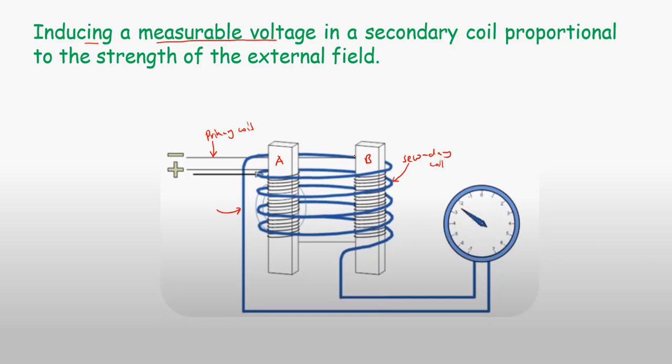Because the magnetic fields produced by A and B are no longer canceling out - in A it's being reinforced while in B it's being reduced - we have some overall magnetic field that will be present and it will induce a measurable voltage in our secondary coil. That measurable voltage is proportional to the strength of the magnetic field, which is our external or Earth's magnetic field.